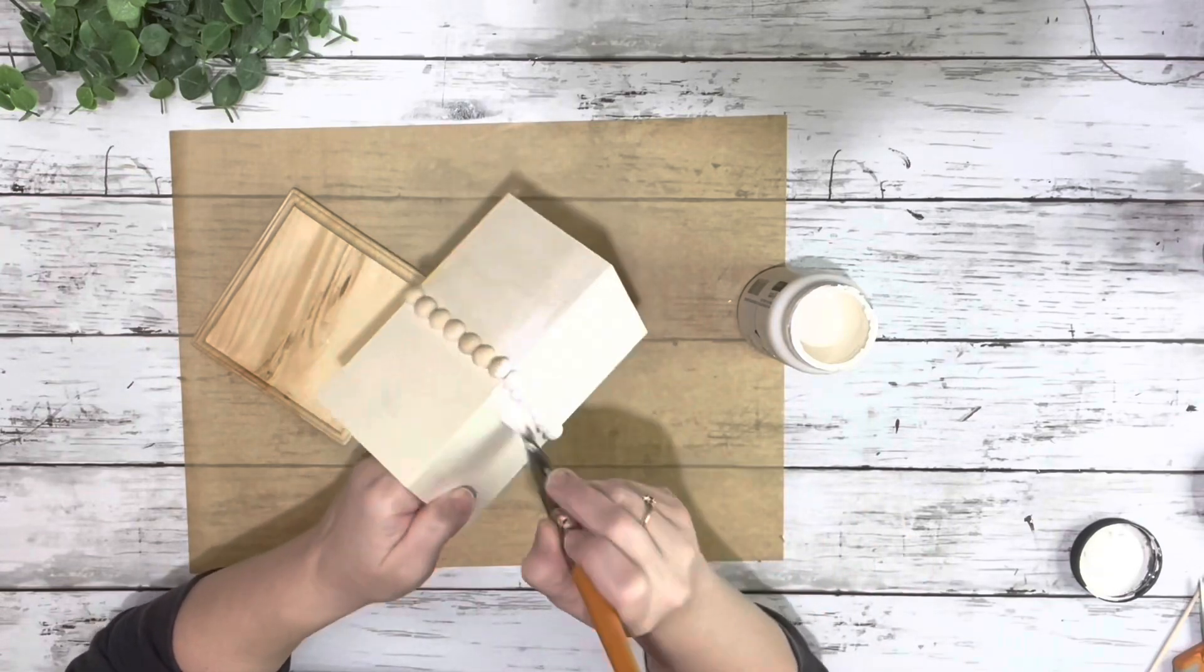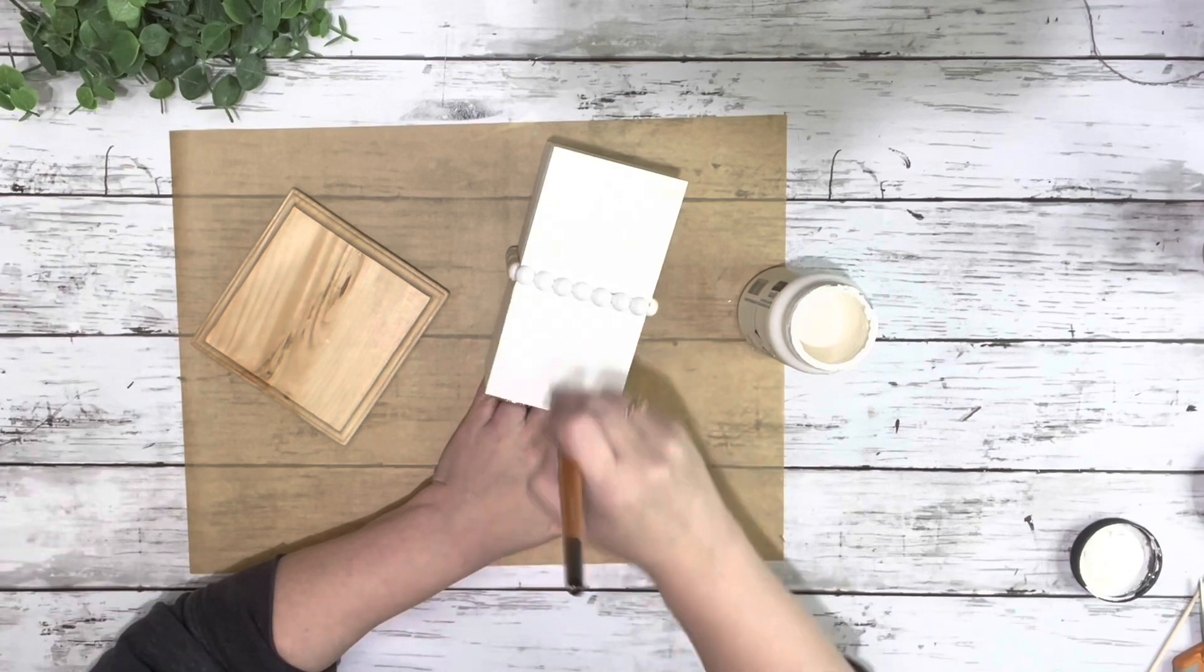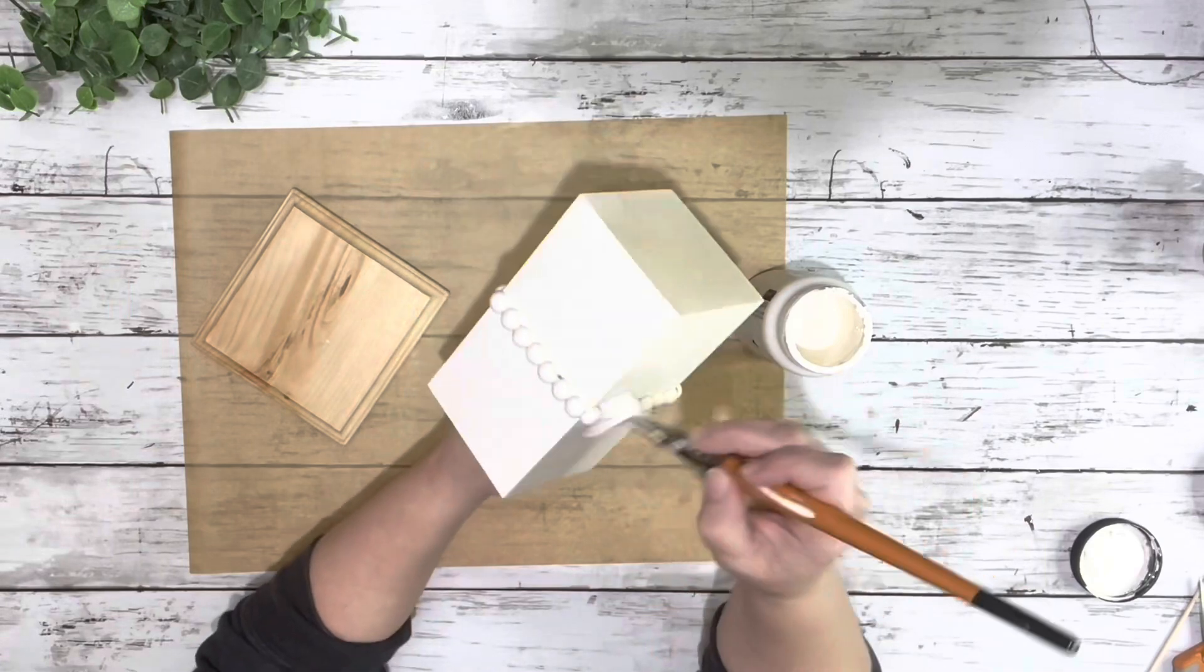And then I also painted the little square plaque. I just left the center part of the plaque plain because I'll be gluing this box right onto it.